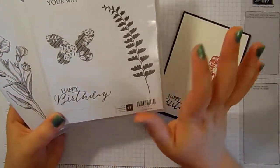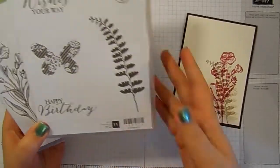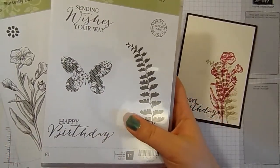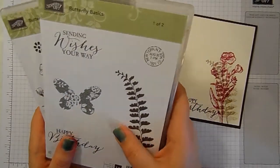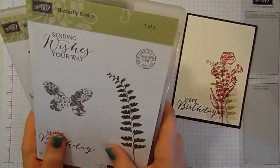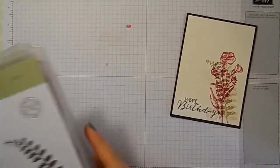This stamp set is available in clear mount, which is what I've got, wood mount and photopolymer, and is currently bundled with the most beautiful collection of Butterfly's framelits, which I haven't got to hand, but I will have pictures of in the blog post. The link is in the down bar below.